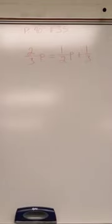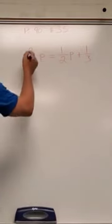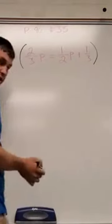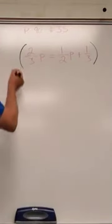This common multiple of our denominators is going to be 6, 2 times 3. So what we can do is multiply everything, the whole problem, times 6.